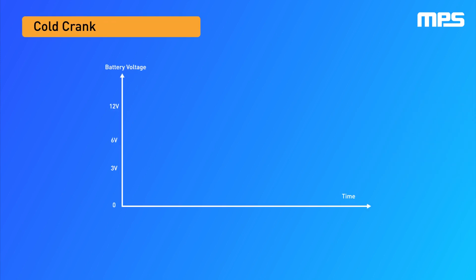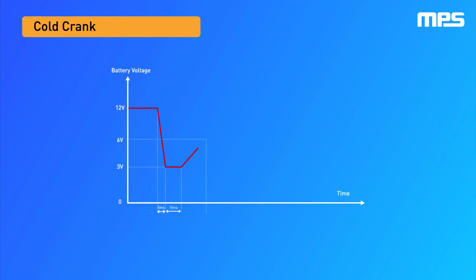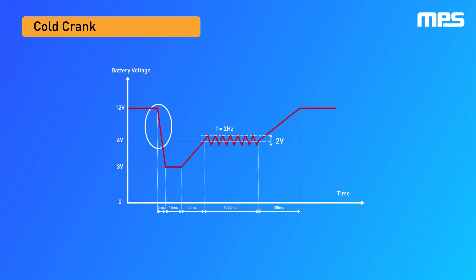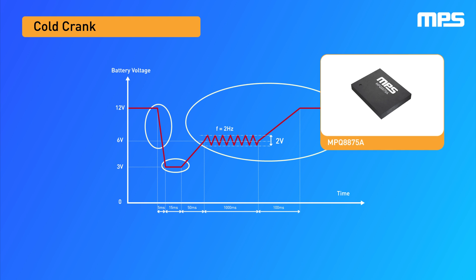A cold crank pulse occurs when the battery voltage drops after the starter draws a high current to turn on a cold engine. The power solution should ensure that there is continuous, stable output regulation for inputs as low as 2.8 volts for a short duration. A buck-boost converter with a wide input voltage range, such as the MPQ88758 from MPS, can be used to address low input voltages.